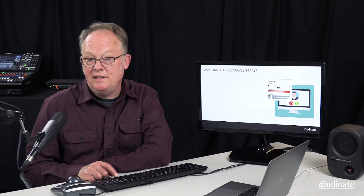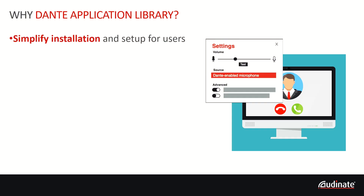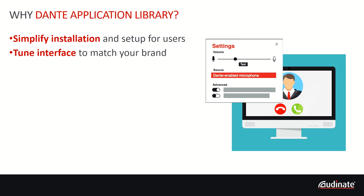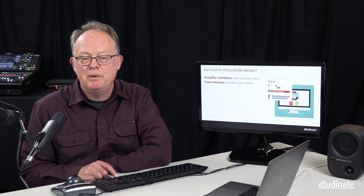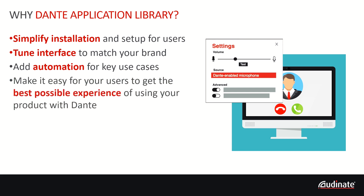So why use Dante Application Library? What does it bring to the table? First of all, it simplifies the installation and setup for your users — they now have to install only one piece of licensed software, not two. It also means you can tune your interface to match your brand so that your customers have a consistent experience all the way through. You can add automation for key use cases, making your product even easier to use. And it allows you to give your users the best possible experience of using Dante with your product.